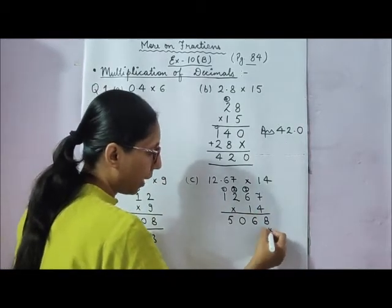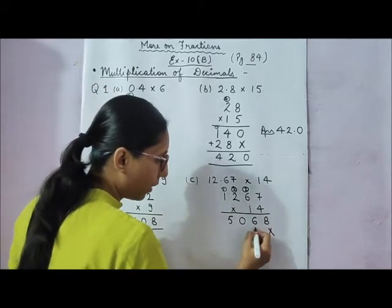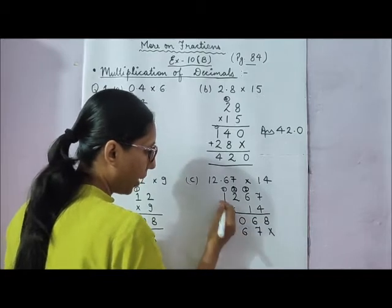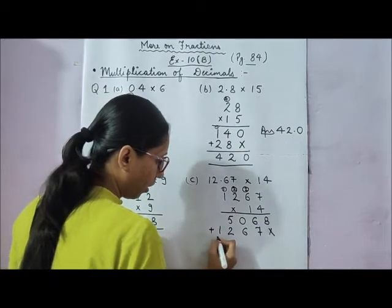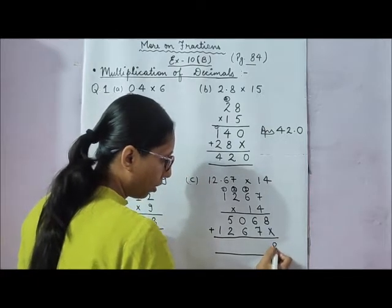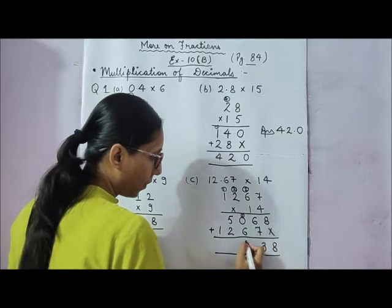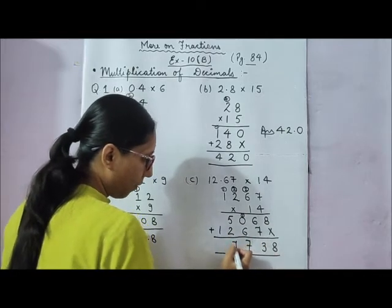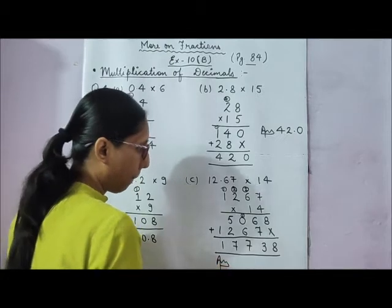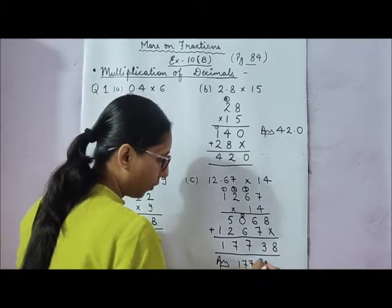Now multiply by 1 — put a cross mark for the second row. 1 times 7 is 7, 1 times 6 is 6, 1 times 2 is 2, 1 times 1 is 1. Now add these numbers: we get 8, then 13 — carry 1 — giving 7, 7, and 1. So the product is 17738.